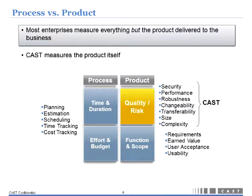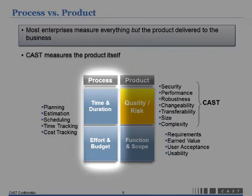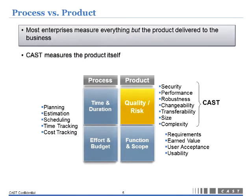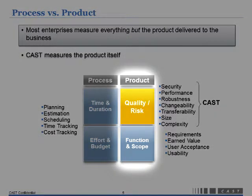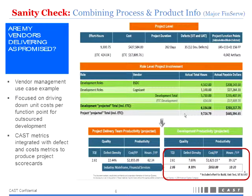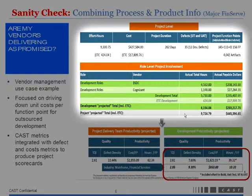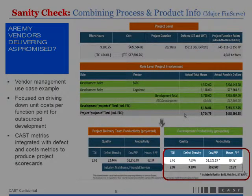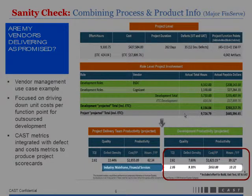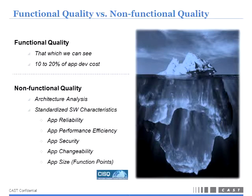Process versus product: process has a lot of metrics around it in organizations, so we won't talk too much about that today. We're really here to measure the end product. As a quick sanity check, this is taken from a client before a release goes into production for a business-critical application. This client has added TQI — Total Quality Index — which goes from 1.0 to 4.0. Every release they measure this application, in this case 2.61, and benchmark it to the industry.